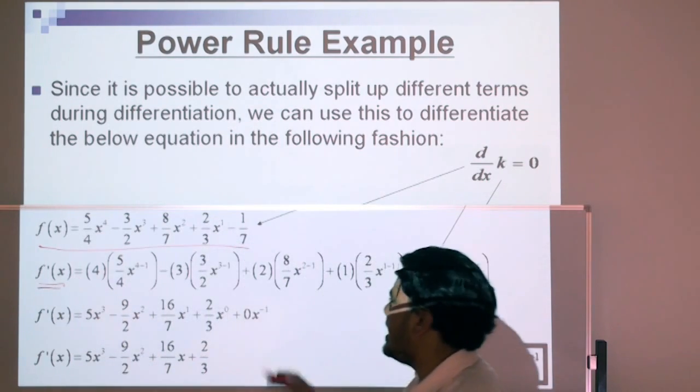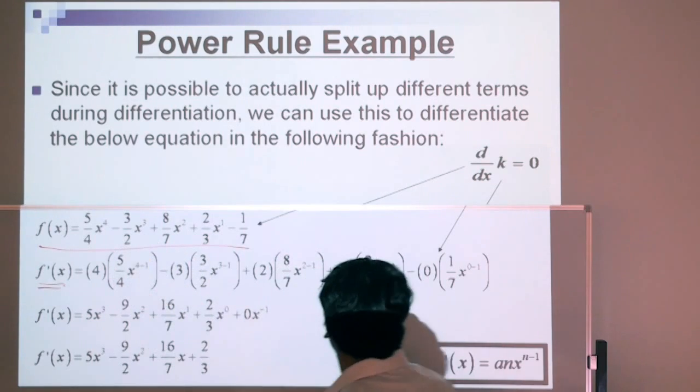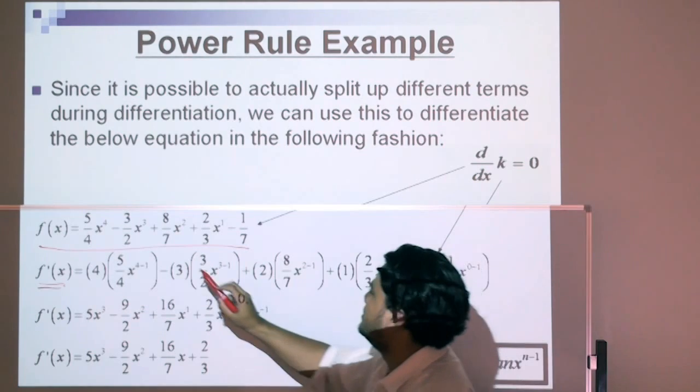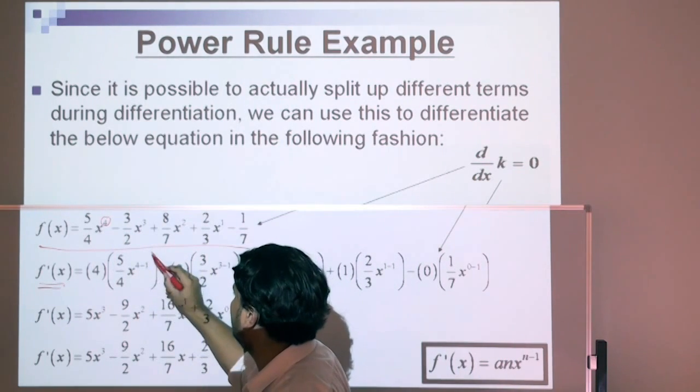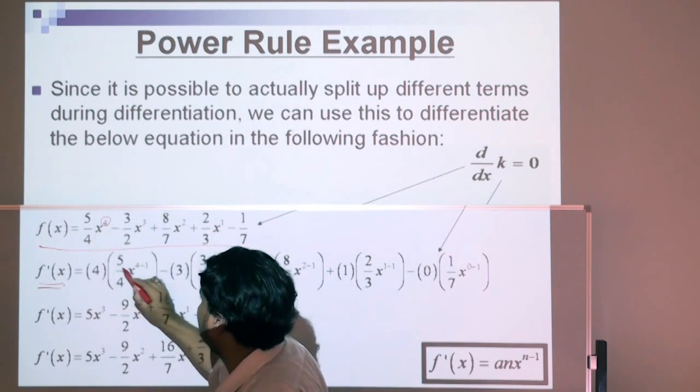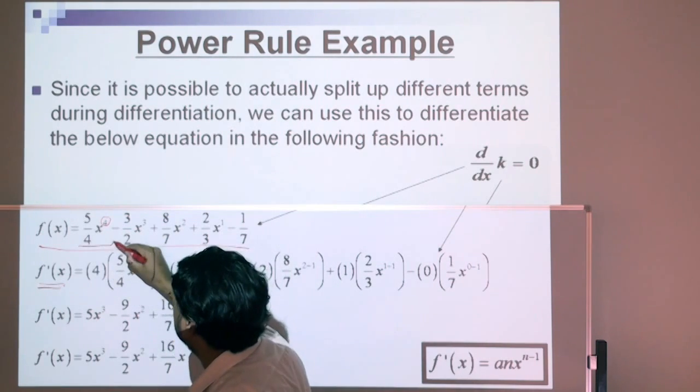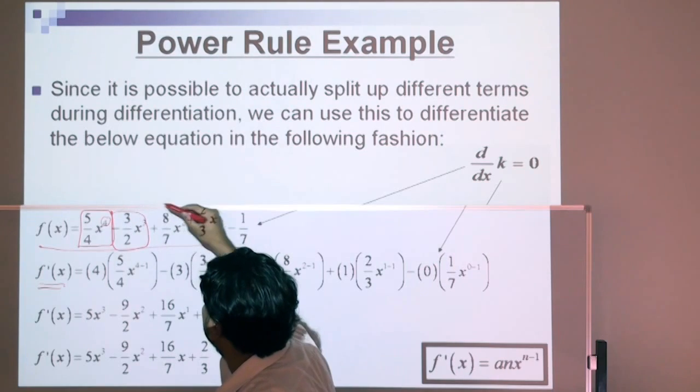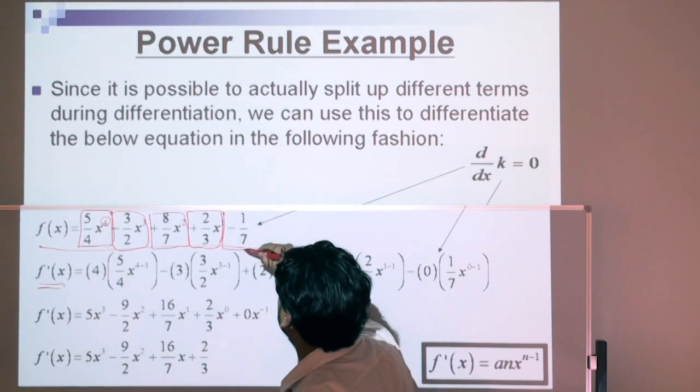f prime, f dash, or the derivative of that function. Here's the law again, a, n, x, n minus 1. We're going to take away 1 from here, that becomes 3. 4 take away 1 is 3, and then we're going to take the 4 and multiply it by the constant. This is done for every term. That's 1, here's another term here, another one here, another one here, another one here, and one here.